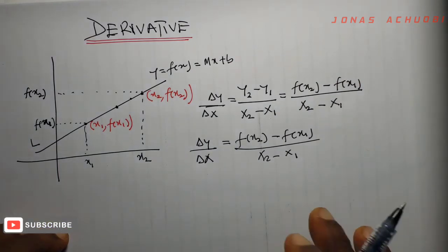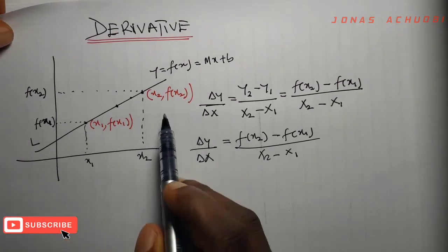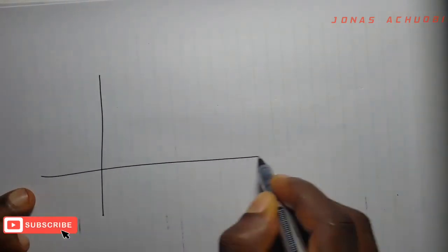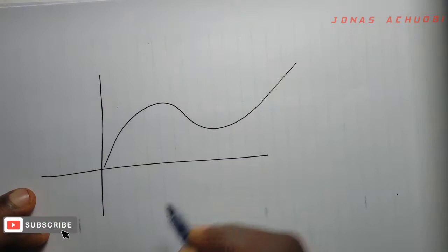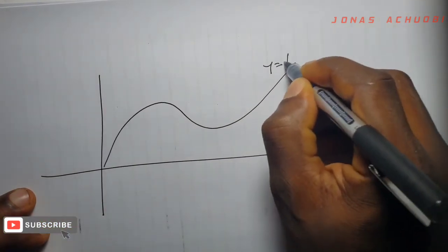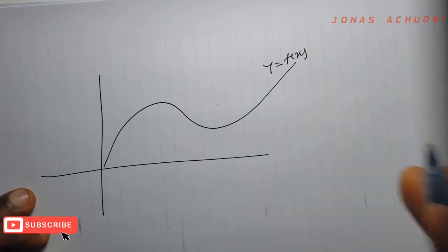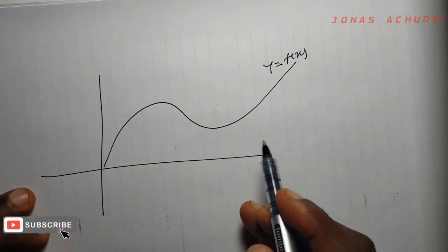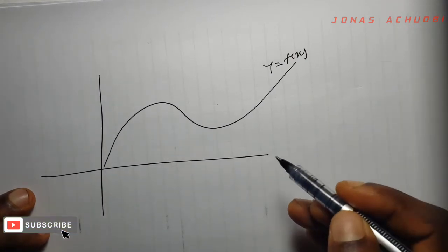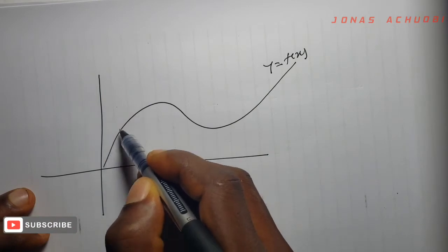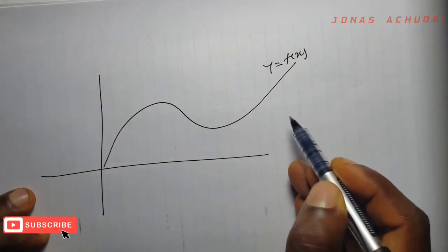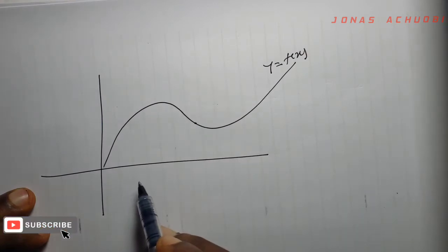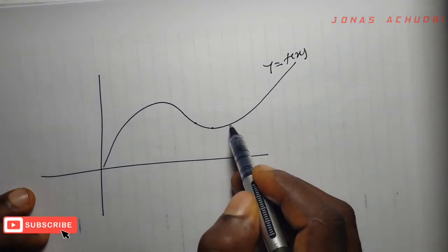Now, we shall consider a case where we don't have a straight line but rather a curve. Suppose we have a curve with equation y equal to f of x, some function of x. We wish to also find the slope of some point on this curve. Unlike a straight line that has the same slope at every point, a curve will have different slopes at different points on the curve.